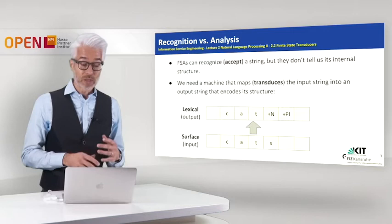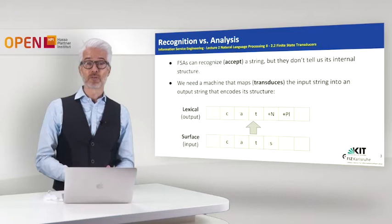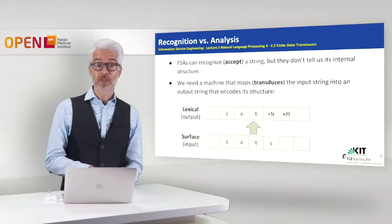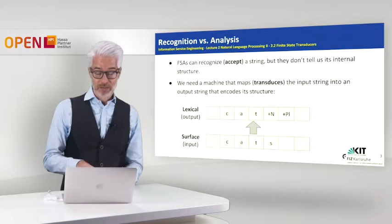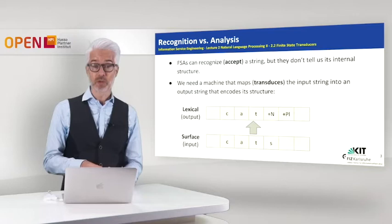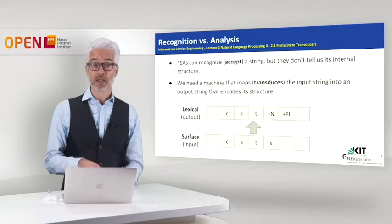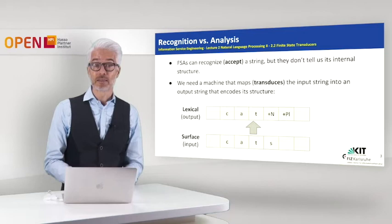What we need, therefore, is not only a finite state automaton. What we need is some kind of a machine that maps the input string to an output string that encodes this internal structure. This is a so-called transducer. So what we read — the input — is the so-called surface form. For example, the word cats. And what we want to get as output is that cat is the stem, that this is a noun, and cats was the plural form. We want to have the exact lexical form, the morphological analysis of the input string.